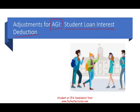It means it gets deducted before you get to AGI, because we're going to have deductions for AGI and deductions from AGI. Once I show you on the form, I'm going to show you clearly what I mean by 'for' and 'from,' because that's important to distinguish. Many CPA exam questions want you to know whether a deduction is for or from AGI. It makes a big difference.